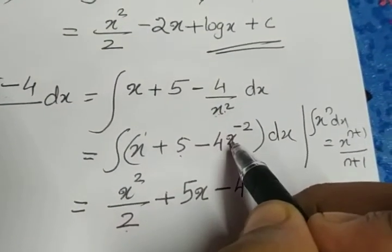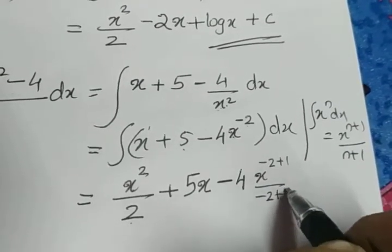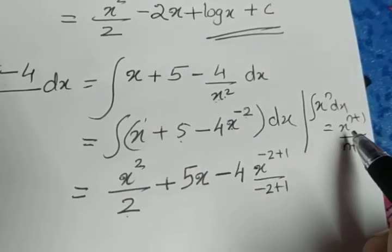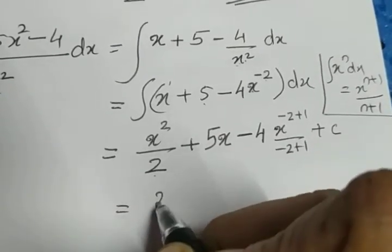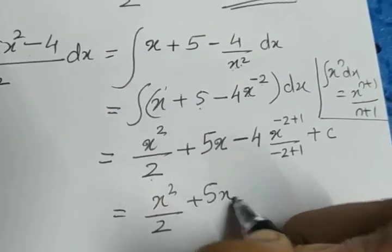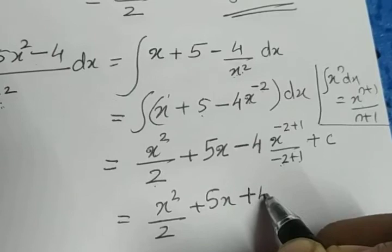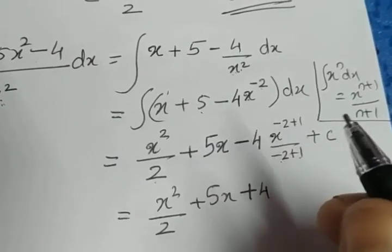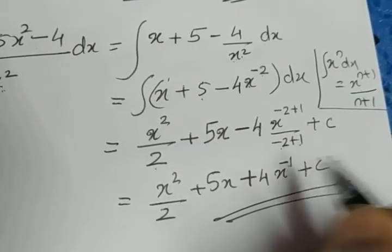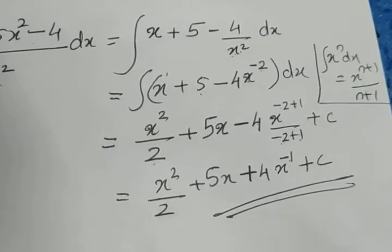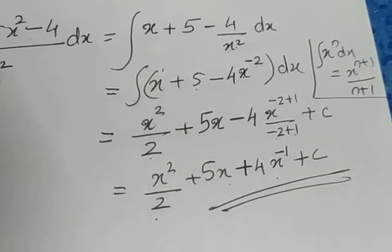Here n = -2, so we get x^(-2+1)/(-2+1). The formula applies the same whether the power is negative or positive. So -2 + 1 = -1, giving x^(-1)/(-1). Then -4 × (-1) = +4, and x^(-1) gives us 4/x. The final answer is x²/2 + 5x + 4x^(-1) + C, which can also be written as x²/2 + 5x + 4/x + C.